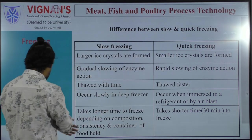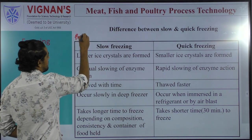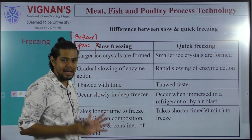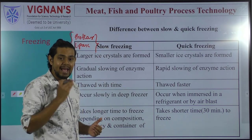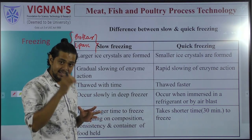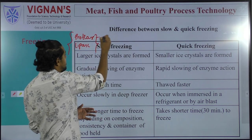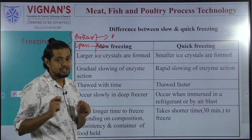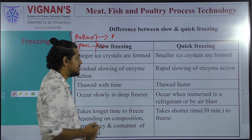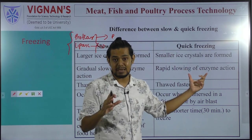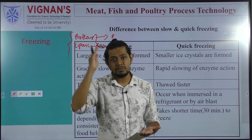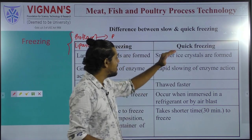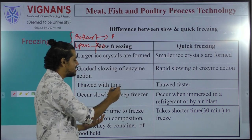In slow freezing, the slowing of enzyme action such as protease and lipase is gradual, so these enzymes remain active for a specific duration and may act on corresponding proteins and fats, bringing about proteolysis and lipolysis, causing undesirable changes. In contrast, quick freezing causes a rapid slowing of enzyme action — protease and lipase activity is immediately halted, preventing formation of undesirable chemical compounds.